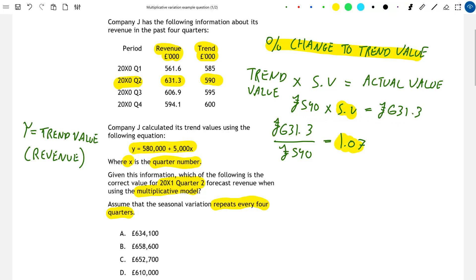So when we multiply the trend value of 590,000 pounds by the seasonal variation of 1.07, we obtain the actual value for revenue in that period. And multiplying by 1.07 is the same as a 7% increase. So again, as the seasonal variation repeats every four quarters, in 20x1 quarter 2, the seasonal variation will also be 7%. So to make our forecast for this period, we just need to find the trend value and then multiply that trend value by our figure of 1.07 to get that 7% increase. And this will give us our adjusted forecast revenue.